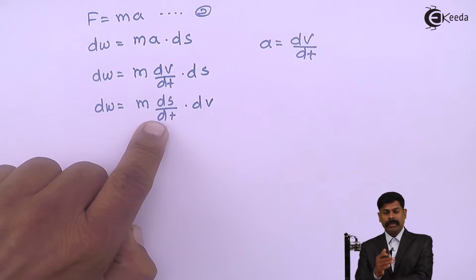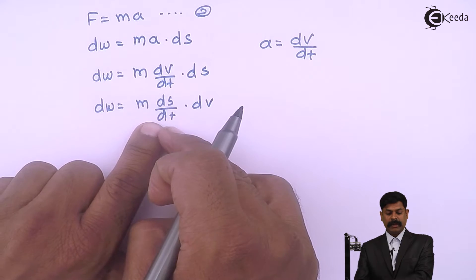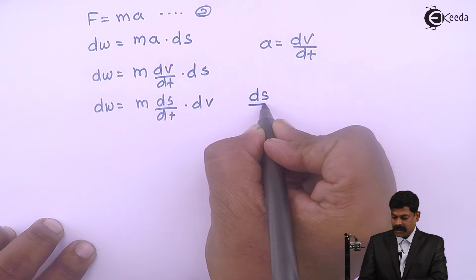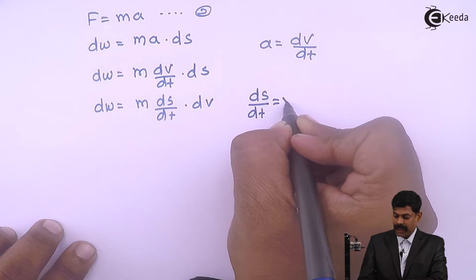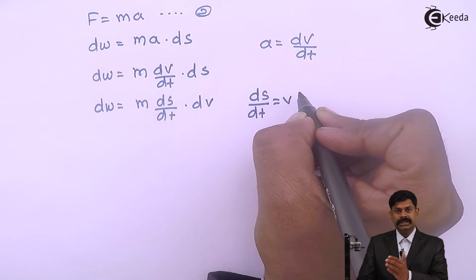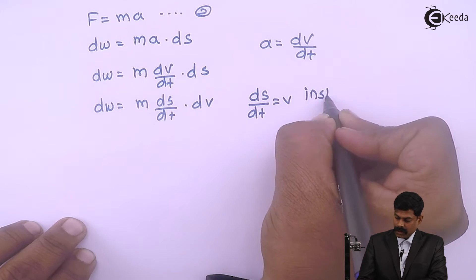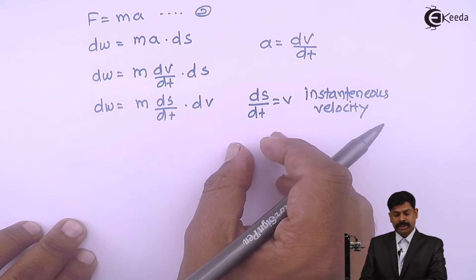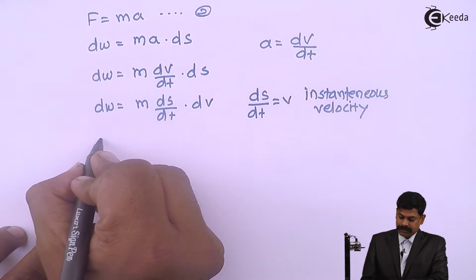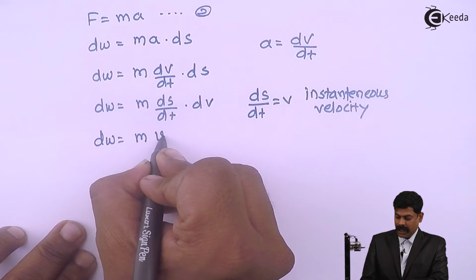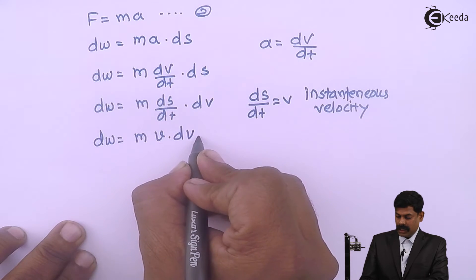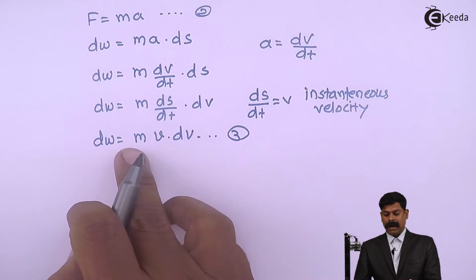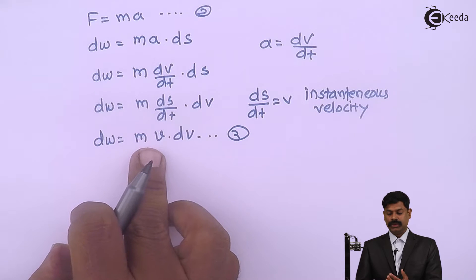Now this term ds by dt — we are familiar with it. The rate of change of displacement is instantaneous velocity, so ds by dt equals v. Replacing this term, dW equals m times v times dv — equation 3. So work done equals the mass of a body times velocity times dv.